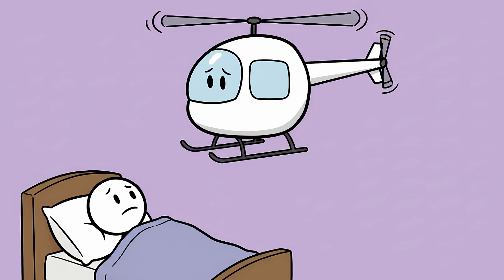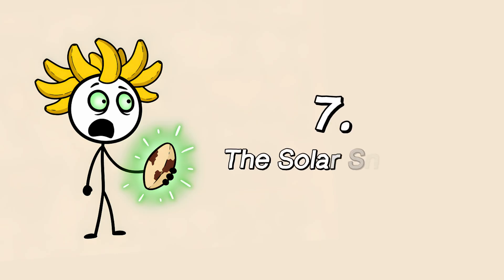Basically, your brain is a helicopter parent who can't handle you relaxing for even a second. Number seven, the solar sneeze.